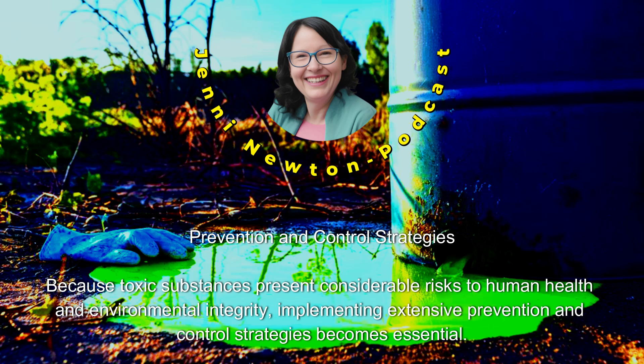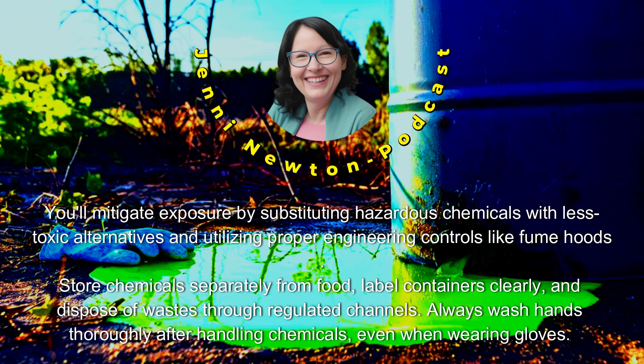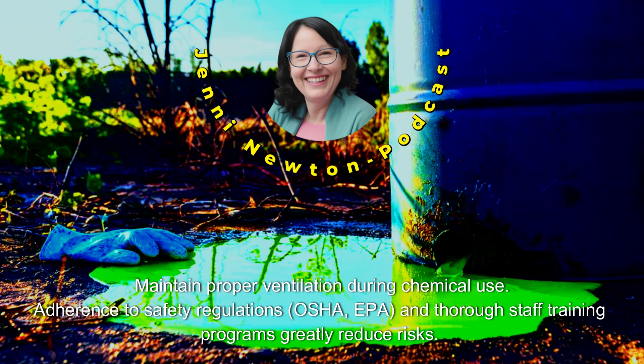Prevention and Control Strategies: Because toxic substances present considerable risks to human health and environmental integrity, implementing extensive prevention and control strategies becomes essential. You'll mitigate exposure by substituting hazardous chemicals with less toxic alternatives and utilizing proper engineering controls like fume hoods. Store chemicals separately from food, label containers clearly, and dispose of wastes through regulated channels. Always wash hands thoroughly after handling chemicals, even when wearing gloves. Maintain proper ventilation during chemical use. Adherence to safety regulations — OSHA, EPA — and thorough staff training programs greatly reduce risks.